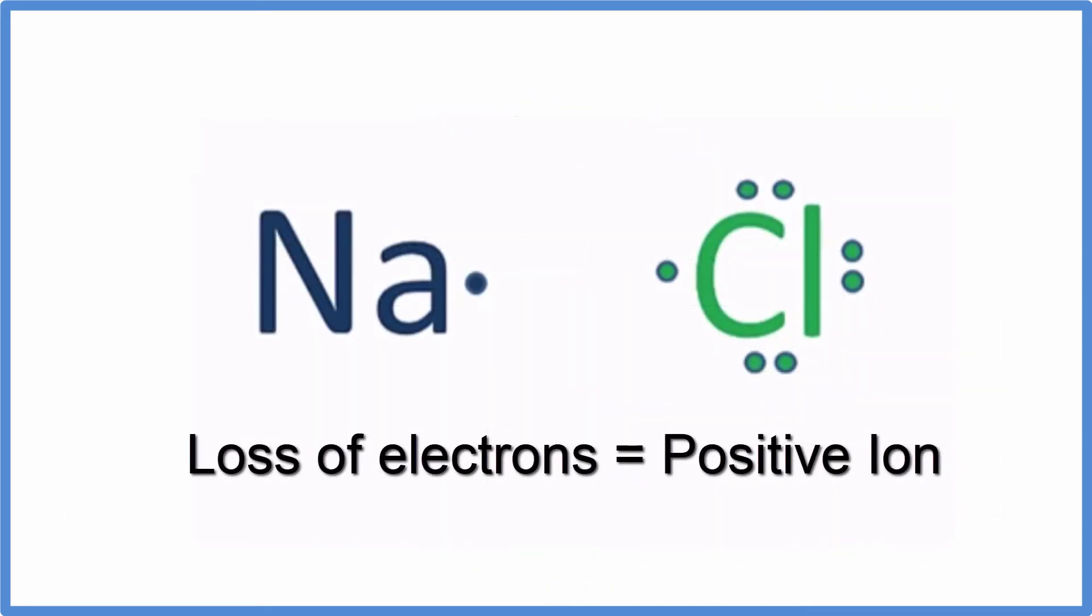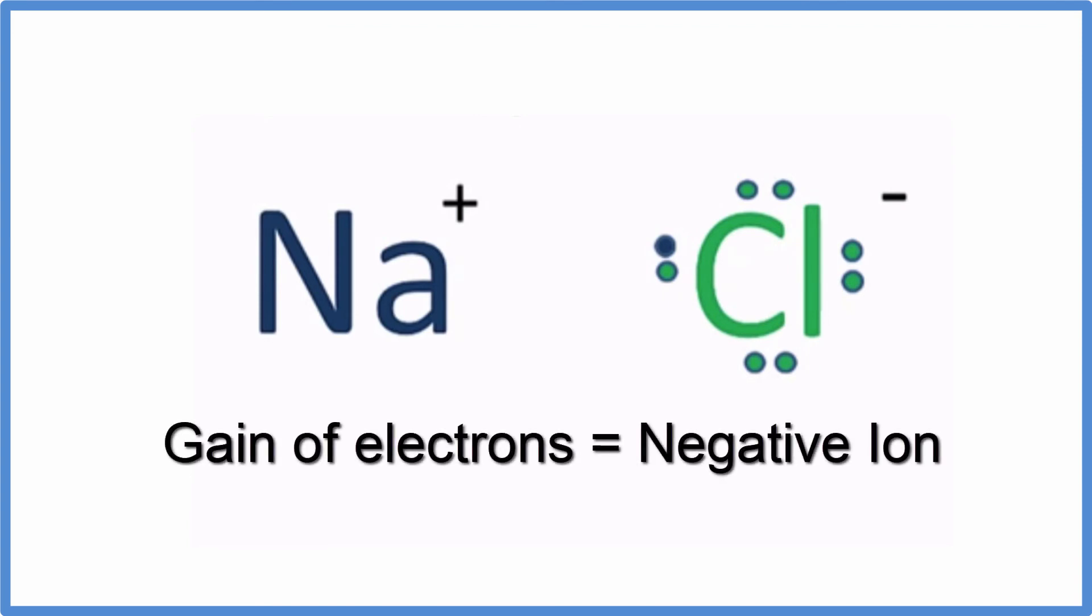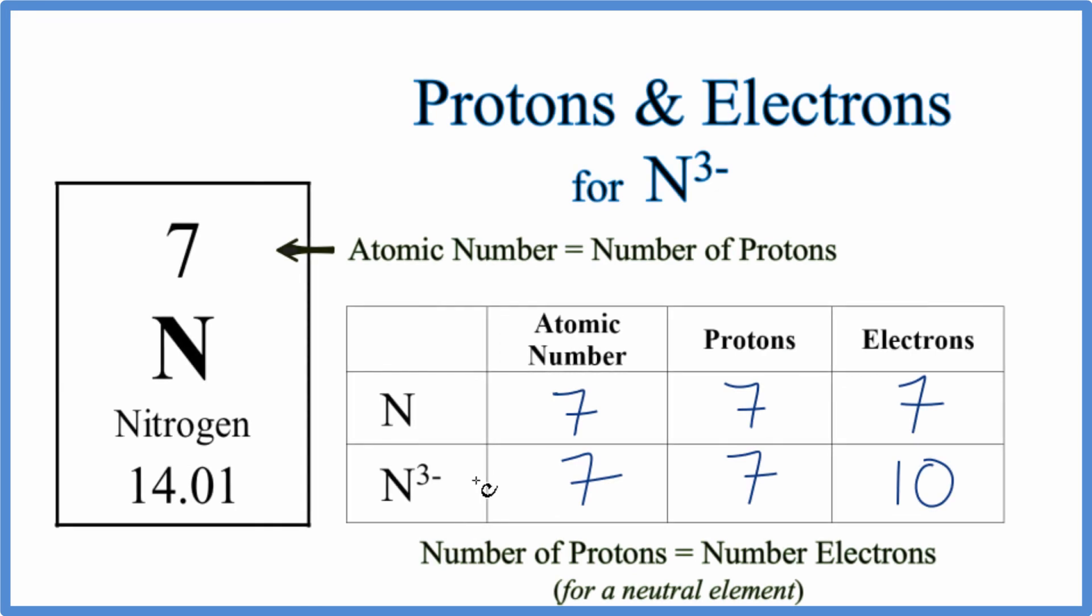It's important to understand that when an atom loses an electron, a negative charge, it becomes positive. The atom that receives that electron gets the negative charge and becomes a negative ion.